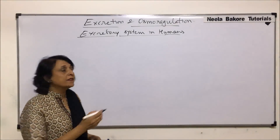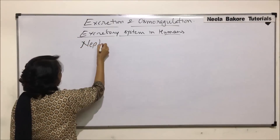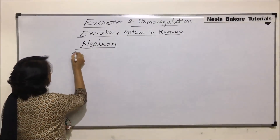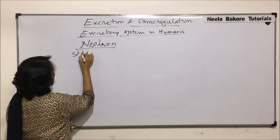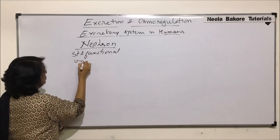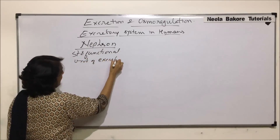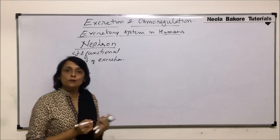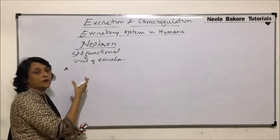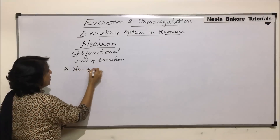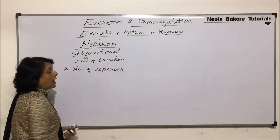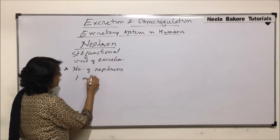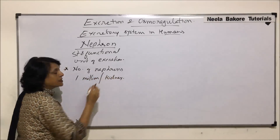In this section, we'll now take up the nephrons. Nephron is the structural and functional unit of excretion. One kidney approximately has one million nephrons — one million per kidney.